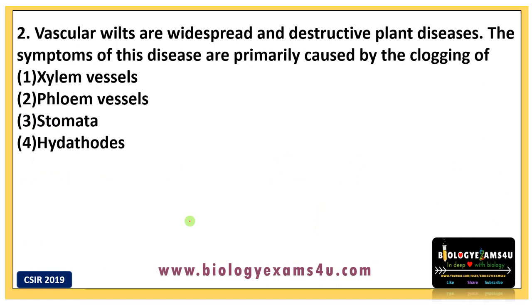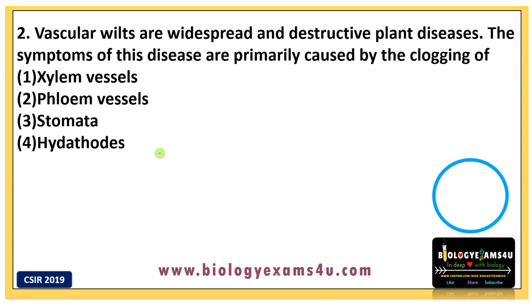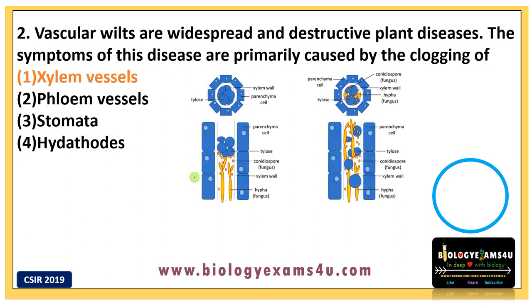Question two: Vascular wilts are widespread and destructive plant diseases. The symptoms of this disease are primarily caused by clogging of — options are: one, xylem vessels; two, phloem vessels; three, stomata; and four, hydathodes. The answer is xylem vessels. We also need to work out the other options.